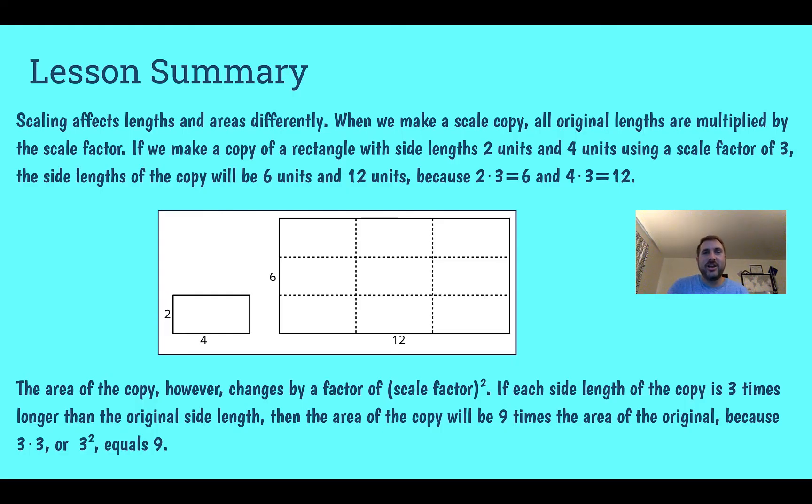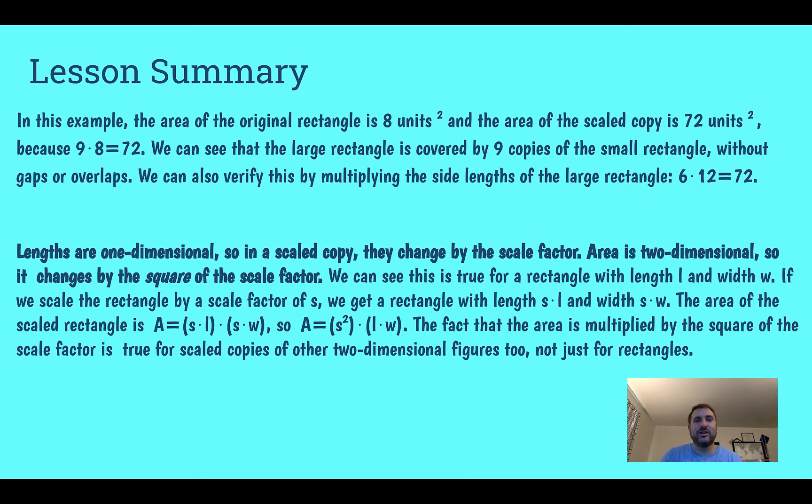In this lesson, we learned that area is different than just the length of first scale factor. Scale copies, all of the original lengths are multiplied. Going sideways, it gets multiplied. And going up and down, it gets multiplied. What this means is that it changes by the scale factor squared, to the exponent of 2. Exponents just mean that it's the number times itself. If each length of this rectangle we can see here was multiplied by 3, then the scale copy is going to be 9 times larger because 3 times 3 is 9. If we wanted to verify, we could see the original rectangle has an area of 8 units and our scale copy has an area of 72 units. 8 times 9 is 72. It's 9 times larger, even though the scale factor was 3.